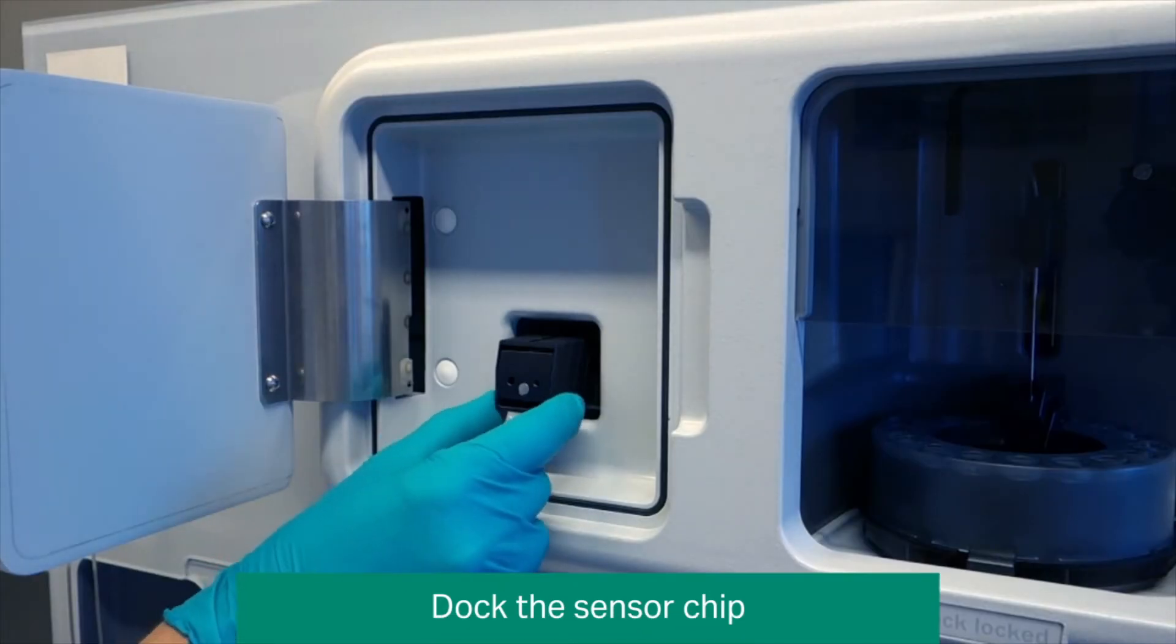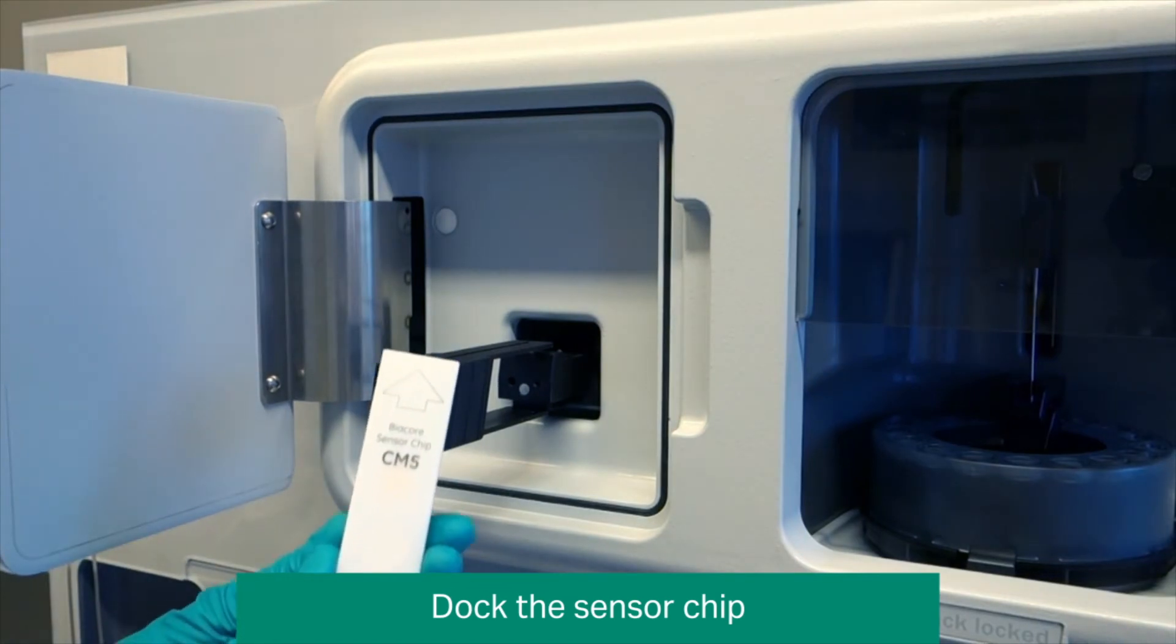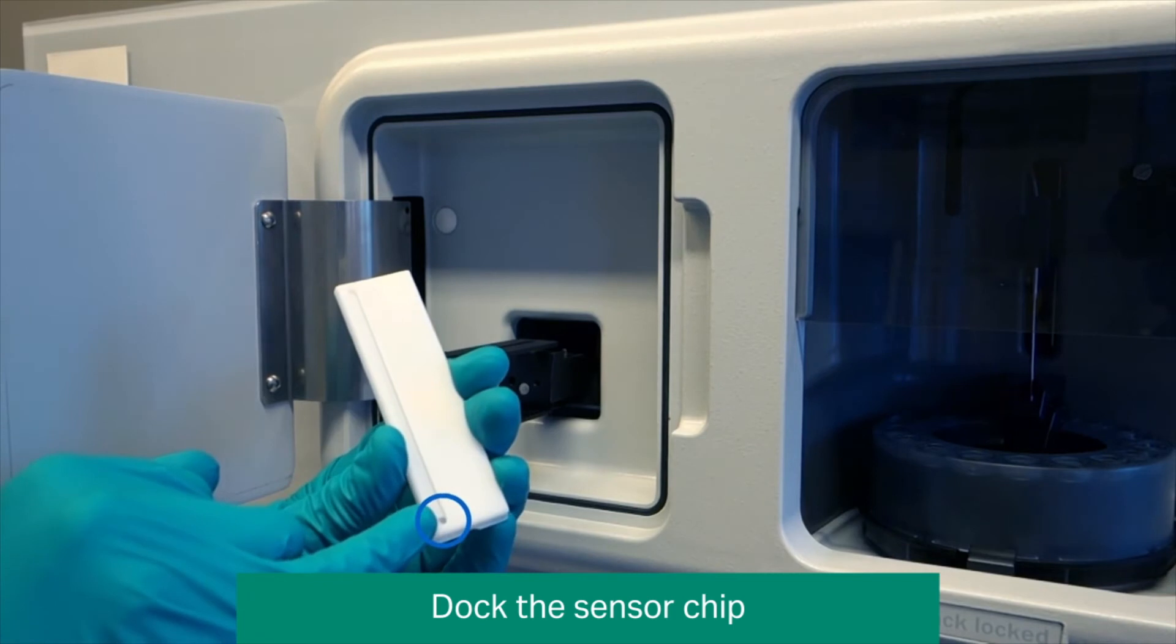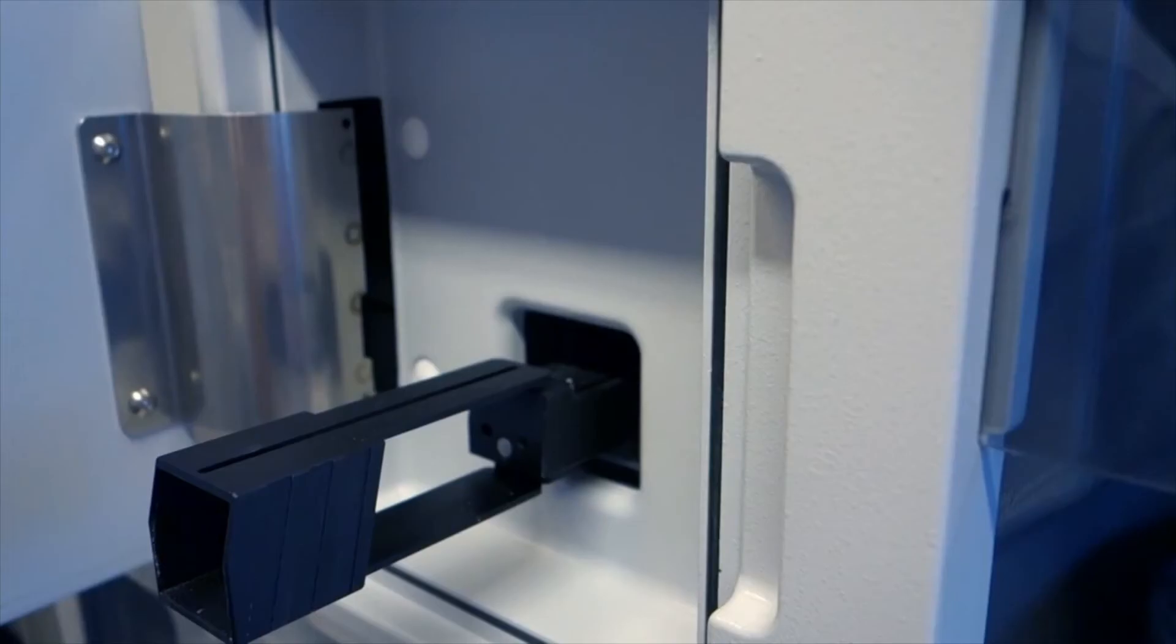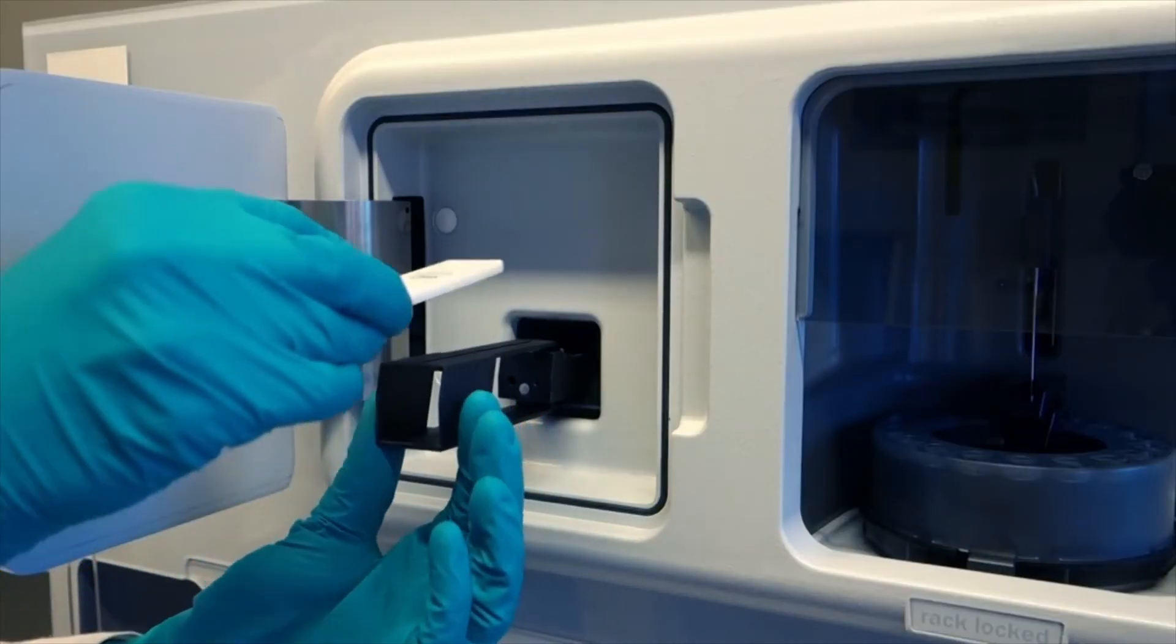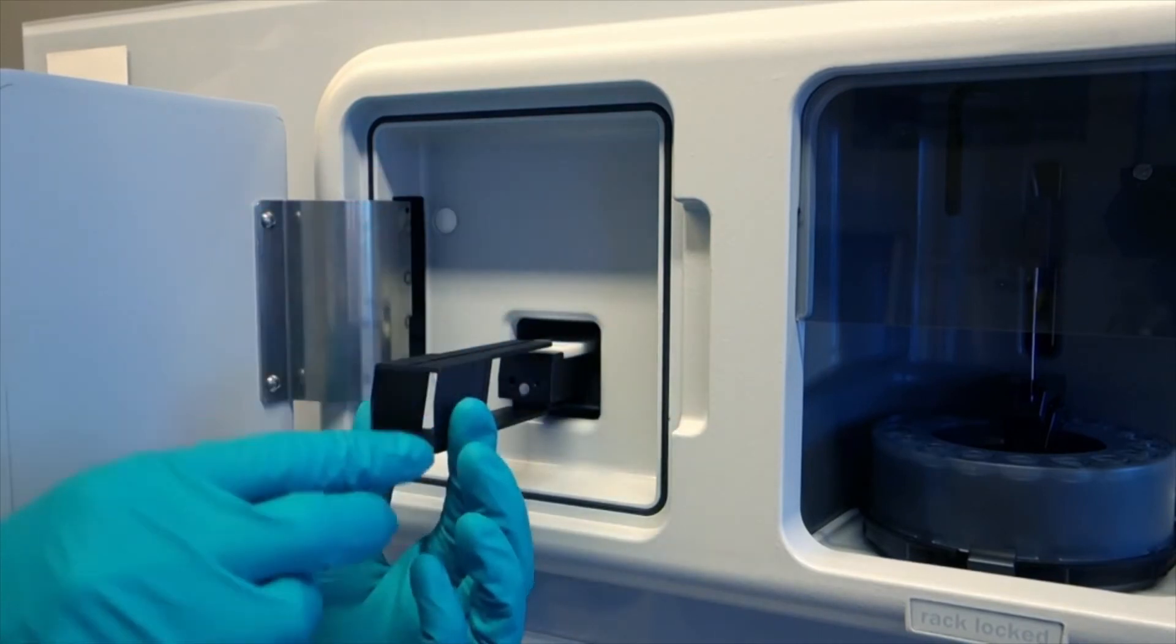To dock the chip, pull out the chip slide. Notice the hole on the underside of the chip carrier and notice the pin. Insert the chip with the text on the upper side and the arrow facing the instrument.